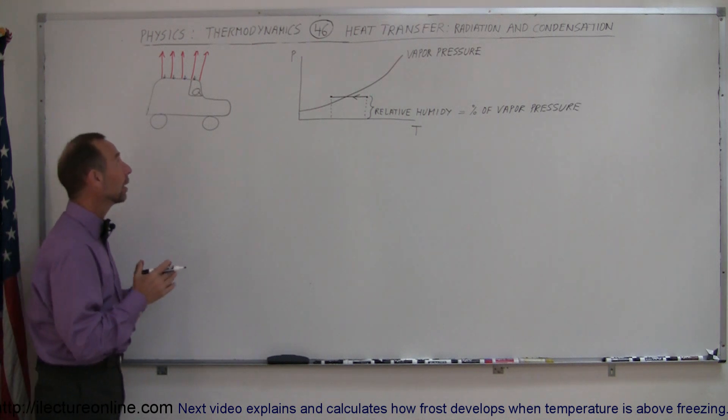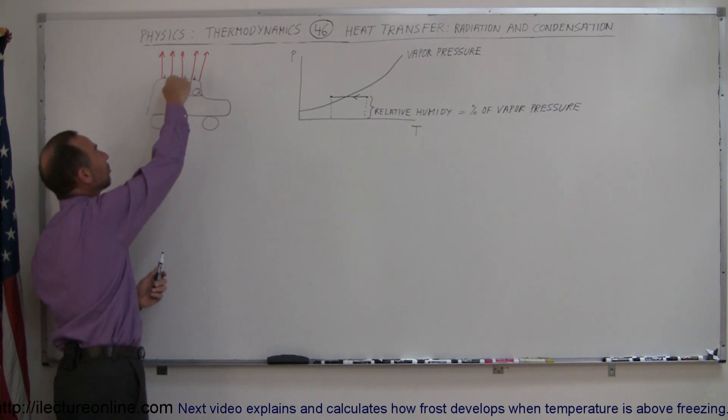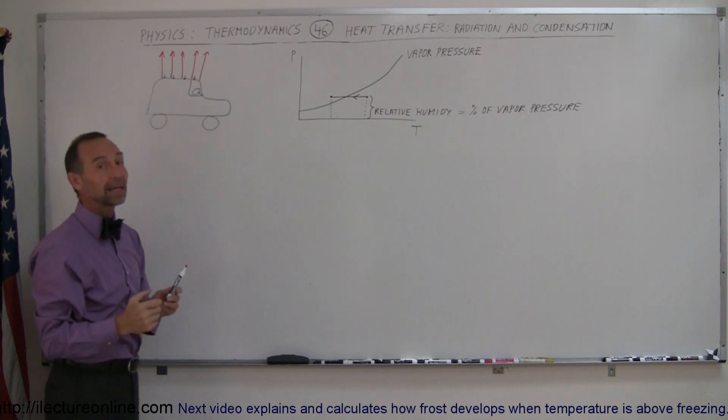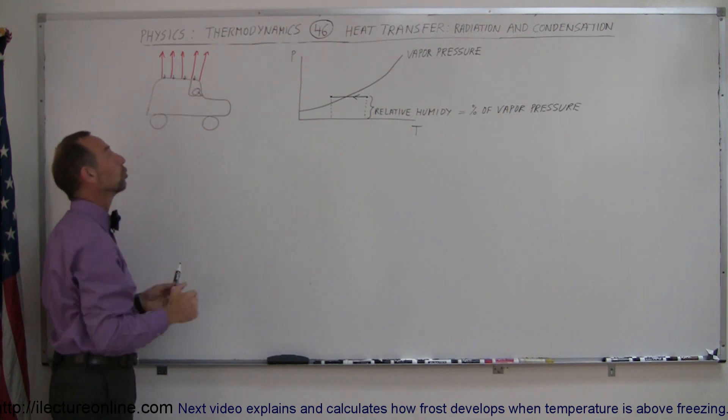Well at night when the sun goes down and everything is exposed to open space, we get very little radiation from space represented by the little black arrows and a lot of radiation going out into space as objects cool down.